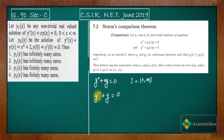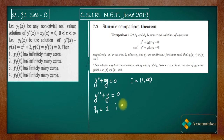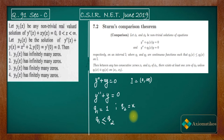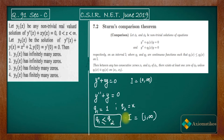The solution for y'' + y = 0 is sin(x) and cos(x). I choose q1 = 1 for this equation, and q2 = x for the equation y'' + xy = 0. On the interval (1, ∞), q1 is less than q2, so the condition q1 < q2 holds on this interval.